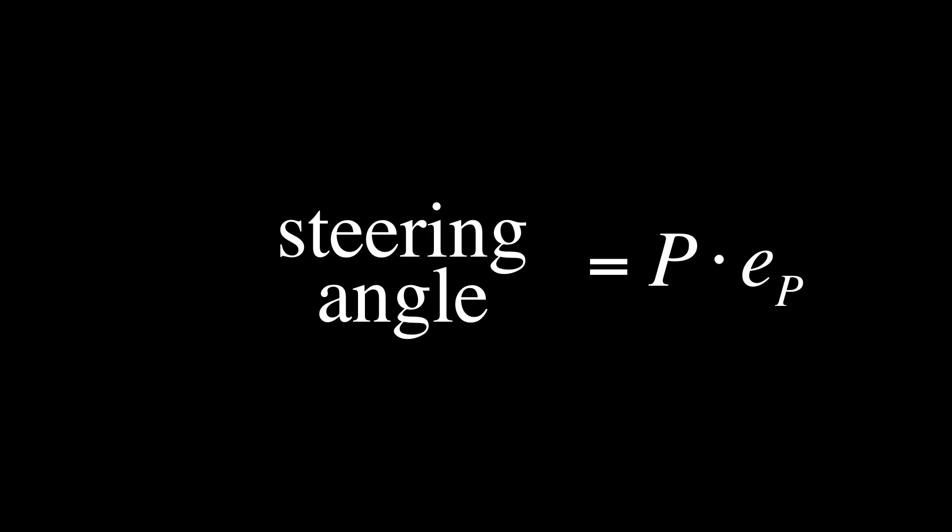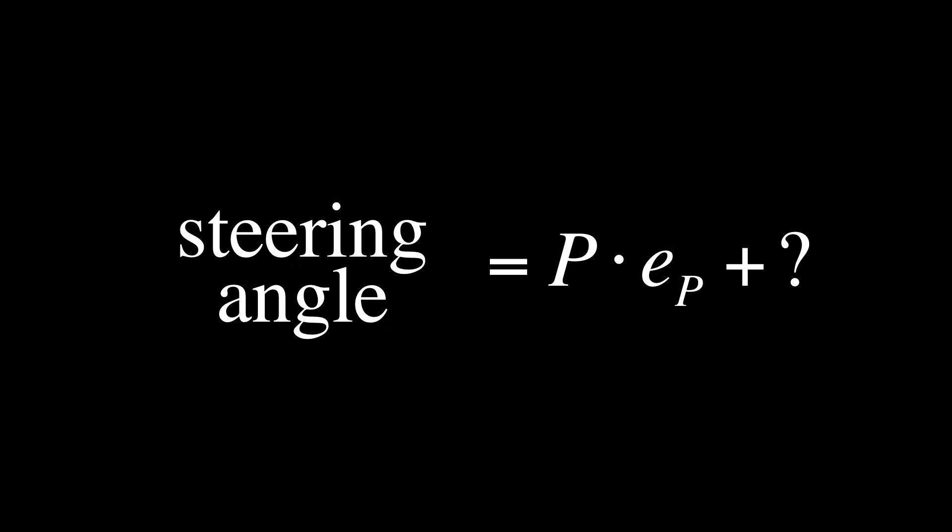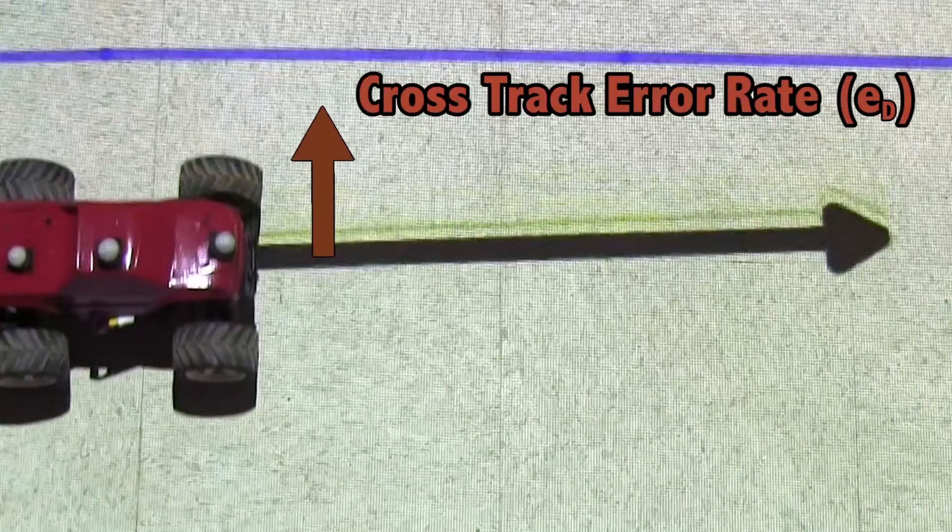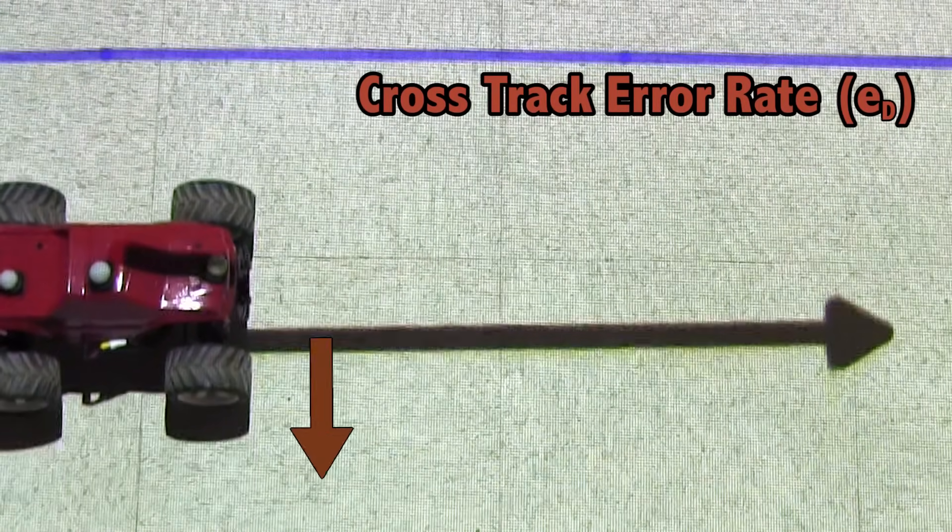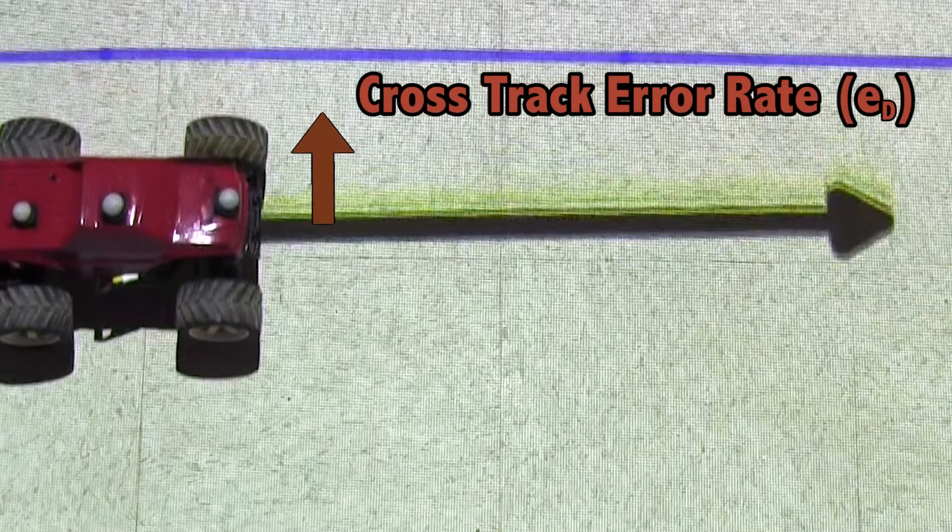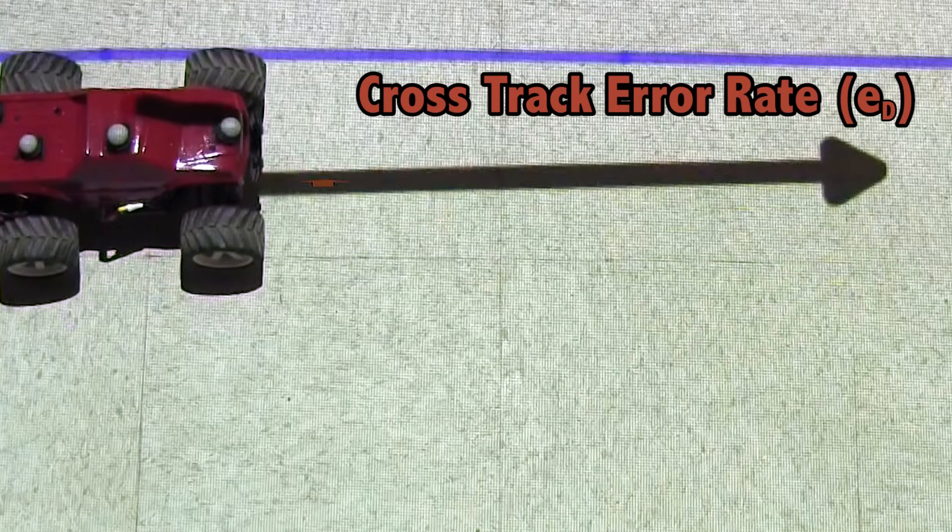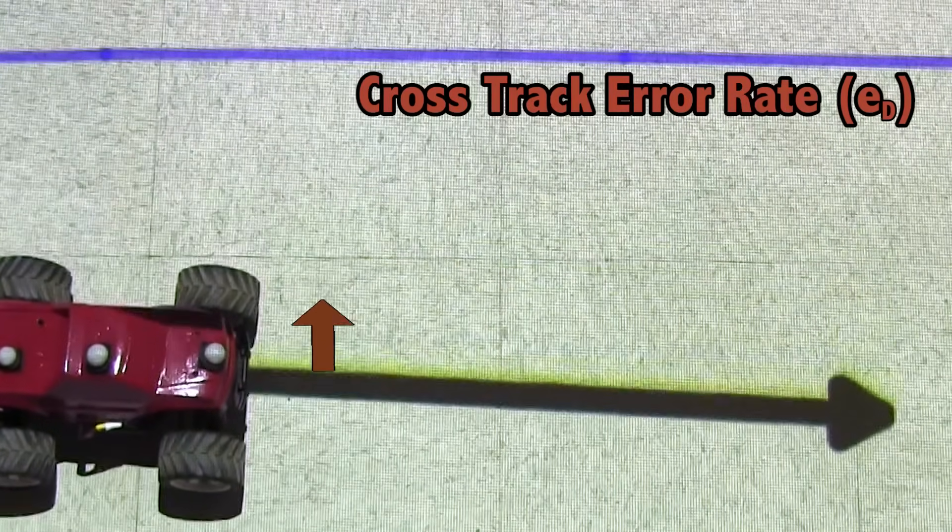To correct this overshooting problem, we need to consider additional error measurements and use them to update our steering command. A good candidate for an extra measurement is to look at the cross-track error rate, or in other words, how fast we are moving in a perpendicular direction with respect to the desired trajectory. If we are perfectly following the trajectory, our cross-track error rate will be zero.